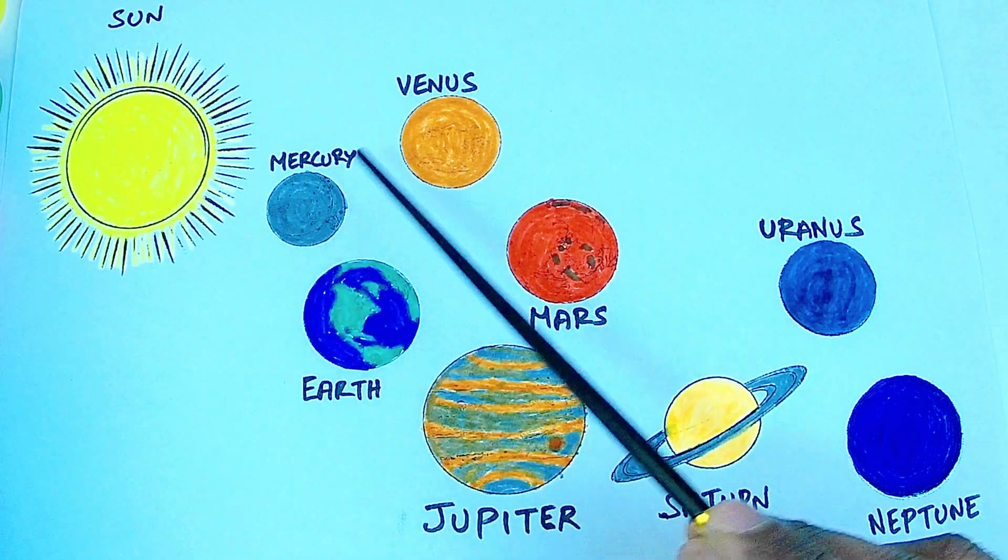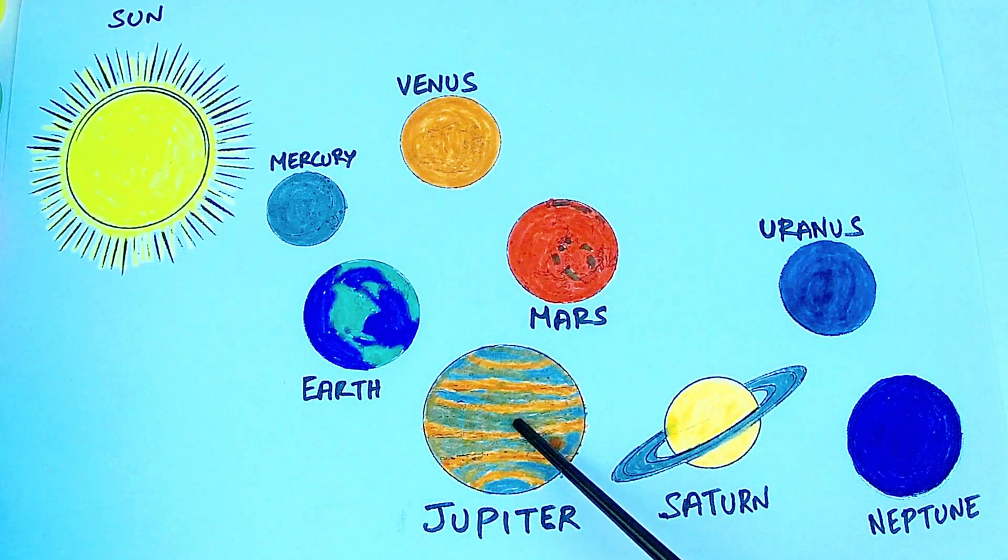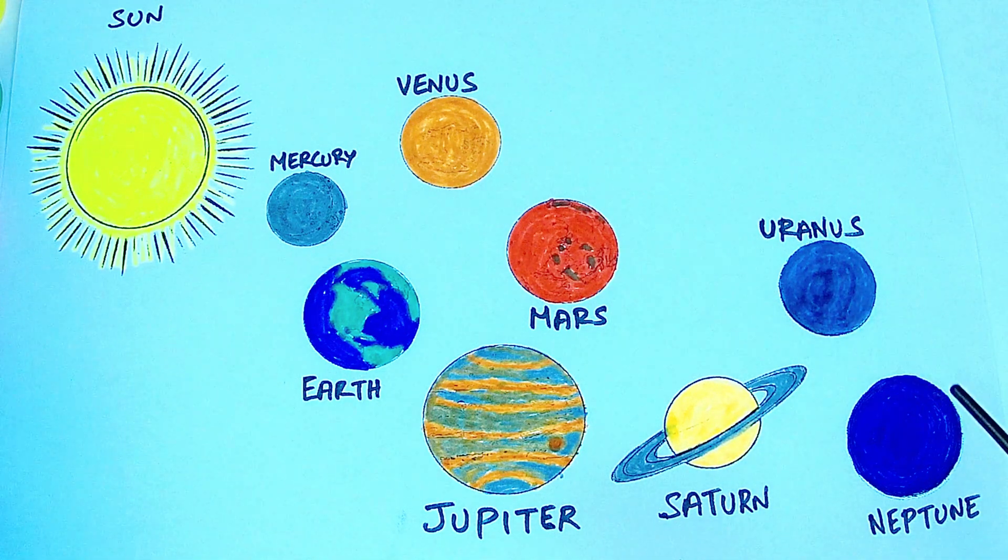Sun, Mercury, Venus, Earth, Mars, Jupiter, Saturn, Uranus, Neptune.